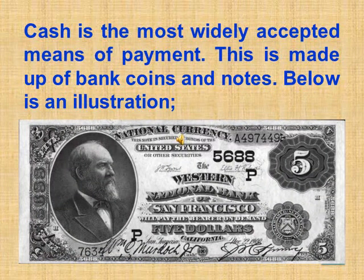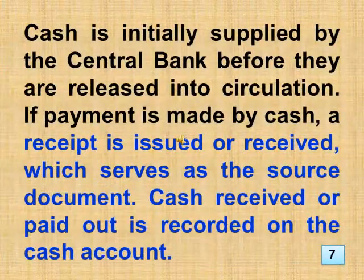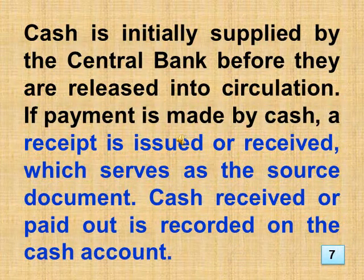Cash is the most widely accepted means of payment. This is made up of bank coins and notes. Cash is initially supplied by the central bank before it is released into circulation. If payment is made by cash, a receipt is issued or received, which serves as the source document. Cash received or paid out is recorded on the cash account.